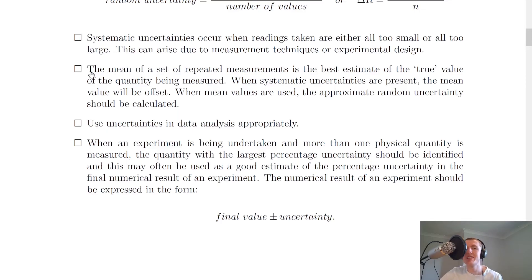Another outcome is relating to the mean here and it says that the mean of a set of repeated measurements is the best estimate of the true value of the quantity being measured. When systematic uncertainties are present, the mean value will be offset. When mean values are used, the approximate random uncertainty should be calculated. So remember you're often going to see questions asking you to calculate the mean from a set of readings and then work out the random uncertainty.